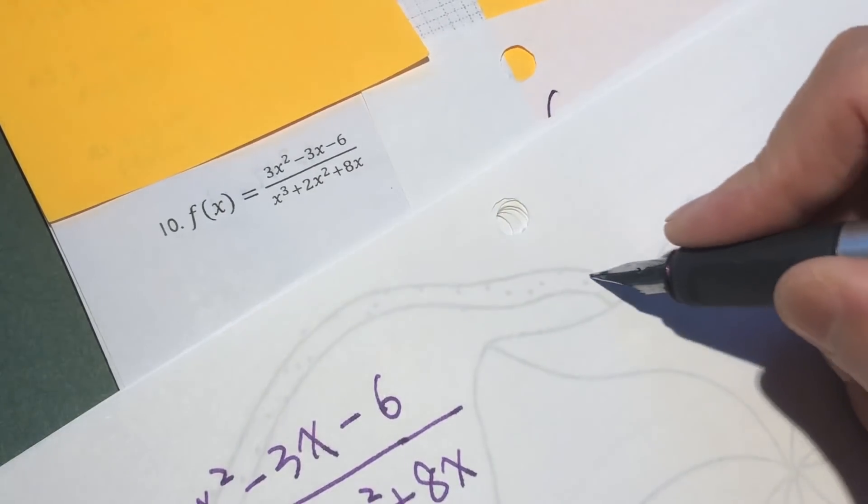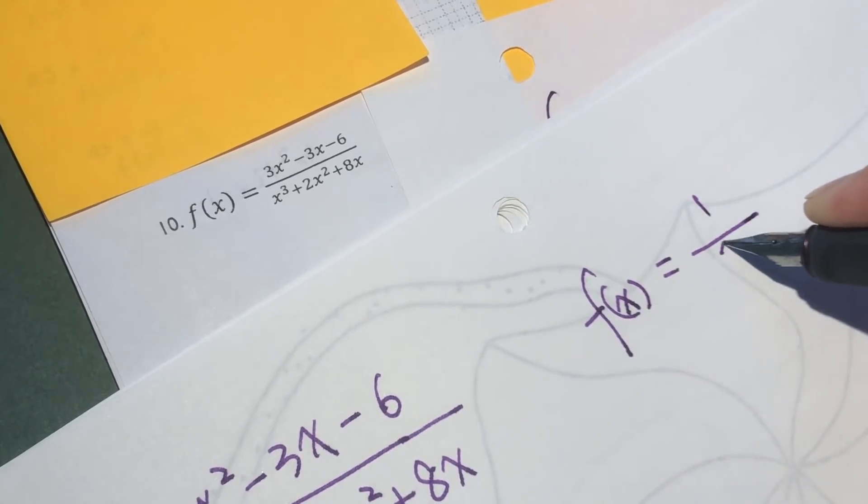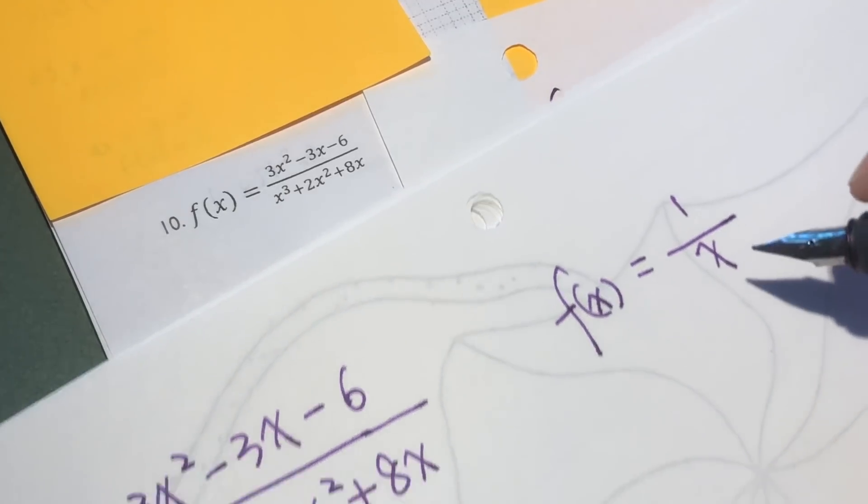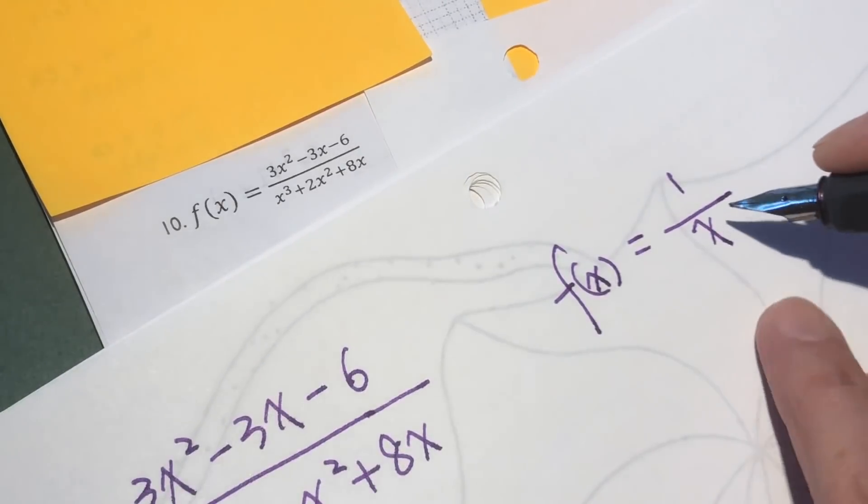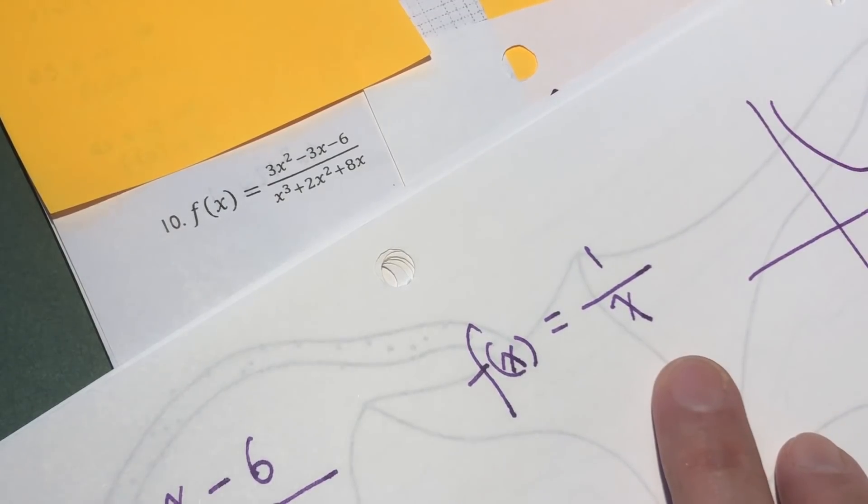And we know the basic function f(x) equals 1 over x. The constant does not make very much difference. So this function, we know, this is a graph.